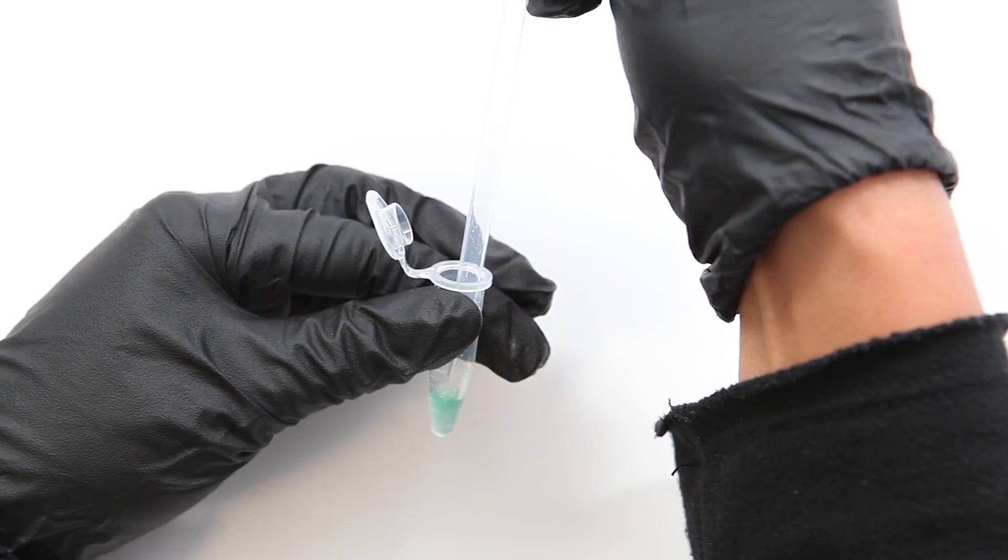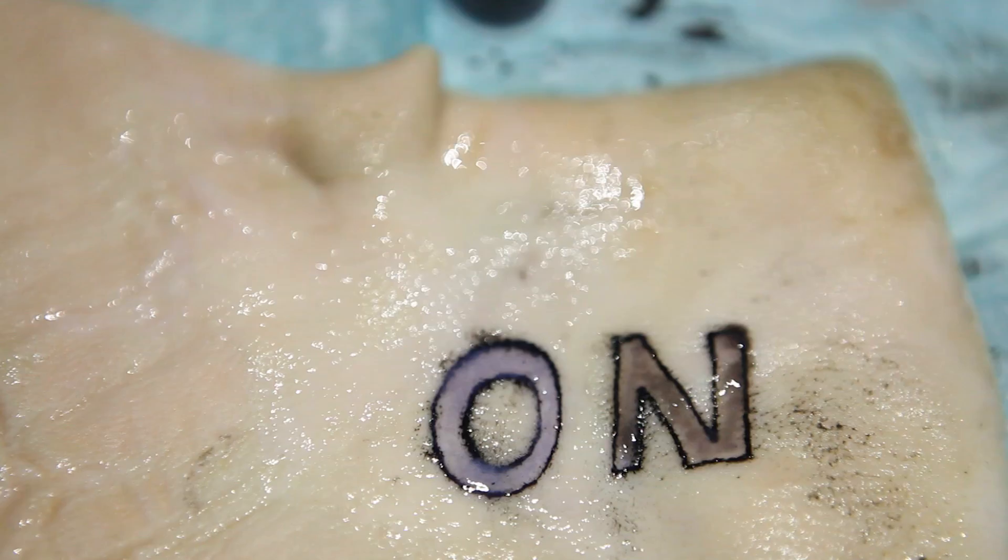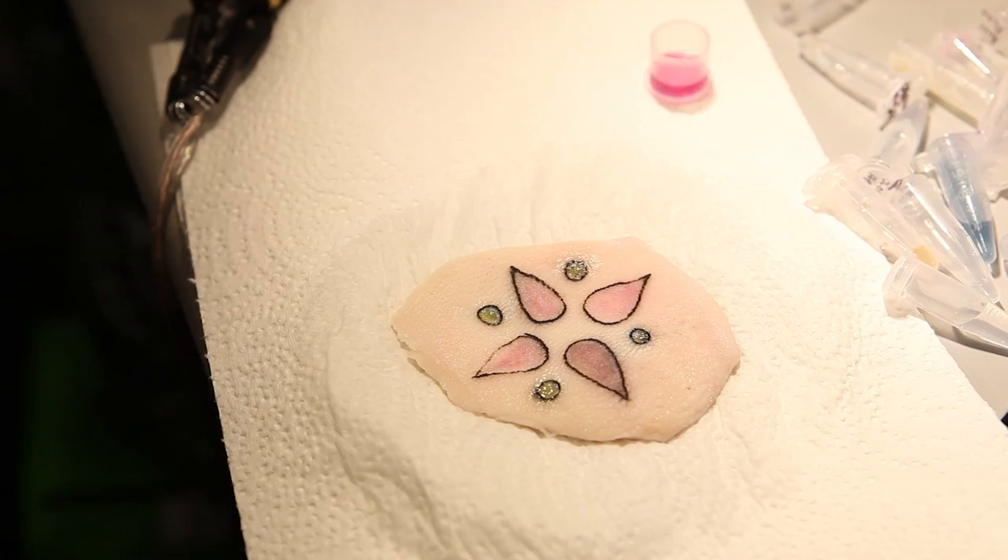The pH sensor changes between purple and pink, and the glucose sensor between blue and brown. The sodium and second pH sensor fluoresce at a higher intensity under UV light.